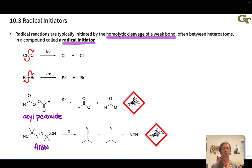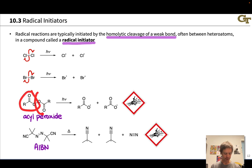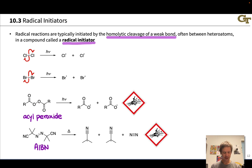Acyl peroxides are a commonly used radical initiator. They have a weak O-O bond between two separate ester groups — two carboxyl groups linked to each other. That weak O-O bond can cleave homolytically to create carboxyl radicals.